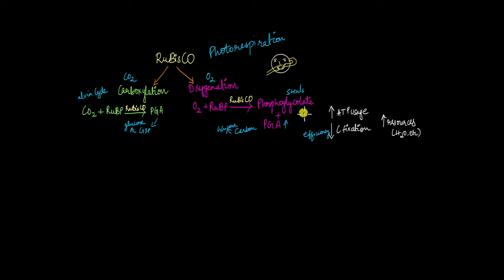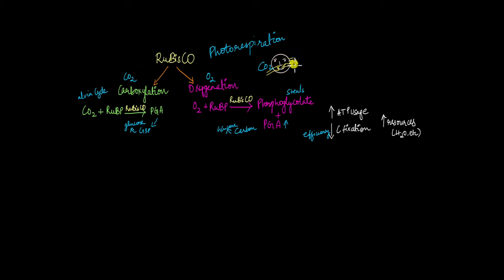This process — where oxygen binds to RuBP in the presence of Rubisco to give phosphoglycolate and PGA — is known as photorespiration, and it is not something that plants require. Carboxylation is like touching your nose directly from the front of your face, while photorespiration is like twisting your arm around your head to touch your nose. Because phosphoglycolate is produced, PGA enters the Calvin cycle inefficiently, decreasing overall carbon fixation efficiency. That's why photorespiration is not beneficial to plants.